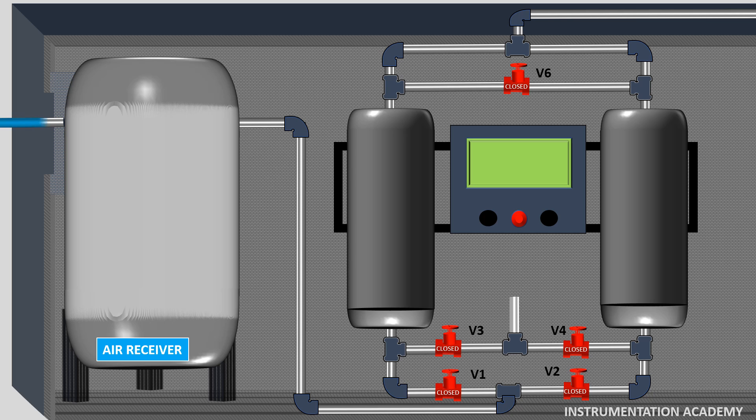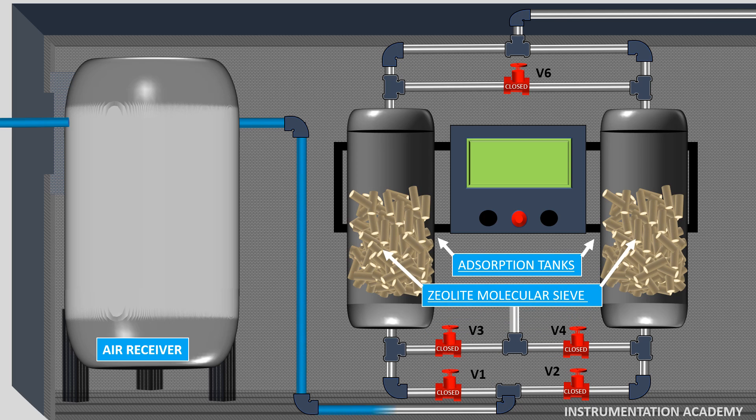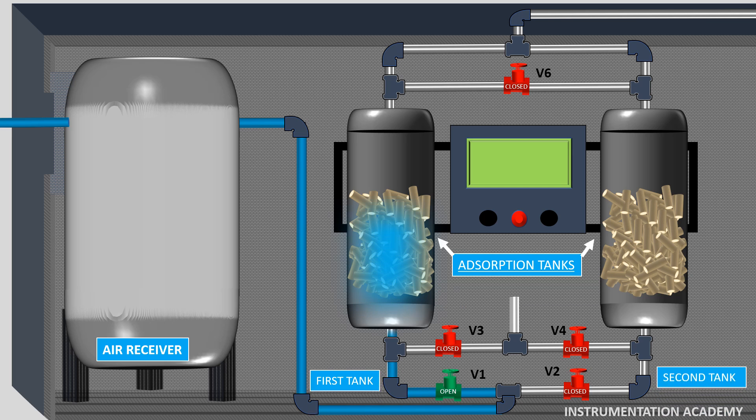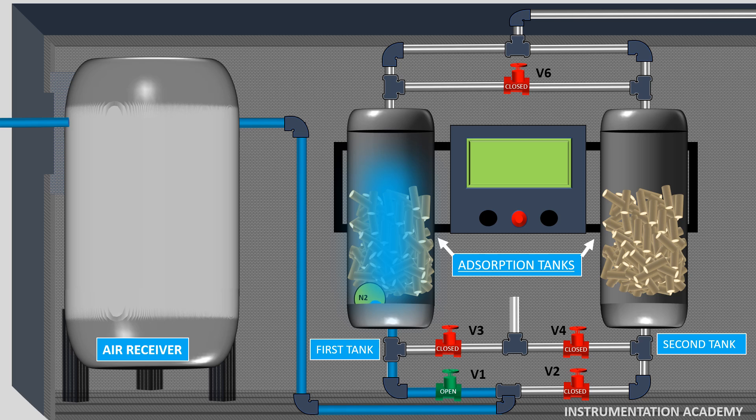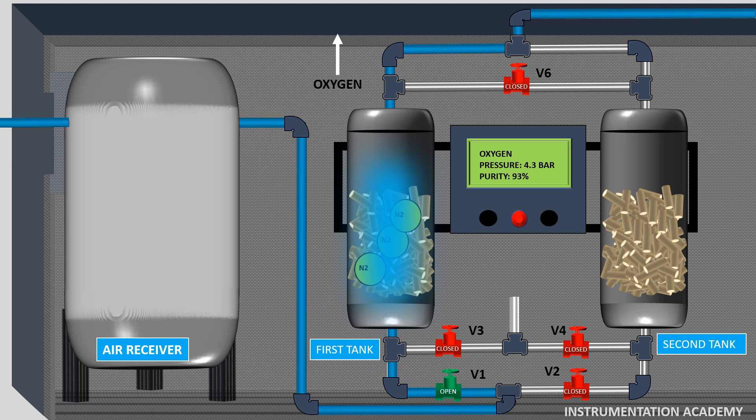The pressure swing adsorption generator has two separate adsorption tanks which contains zeolite molecular sieve as adsorber. Dry compressed air from the air receiver is blown through a valve V1 to the first tank where the pressure is built to reach the operating pressure. As the air passes through the zeolite in the first adsorption tank, the nitrogen molecules get trapped in the pores of the zeolite while oxygen will pass through the adsorber and exit as product gas.